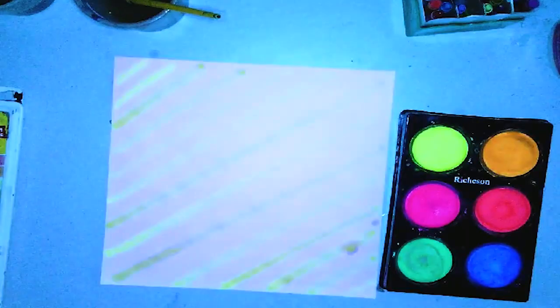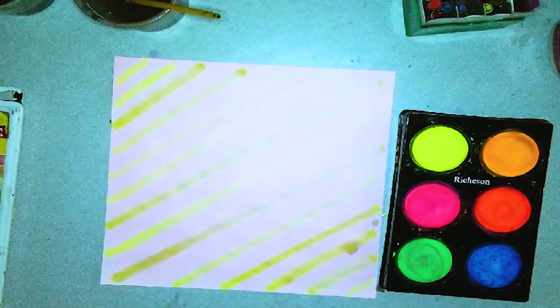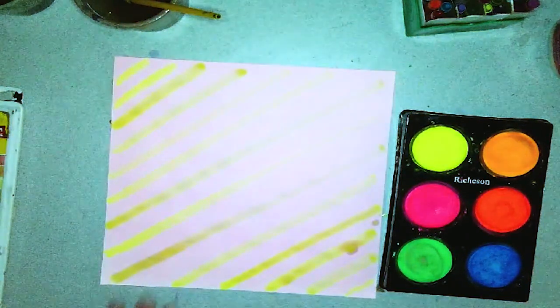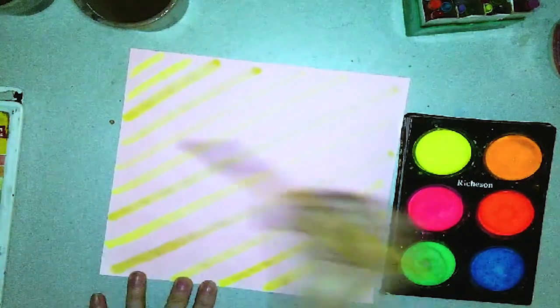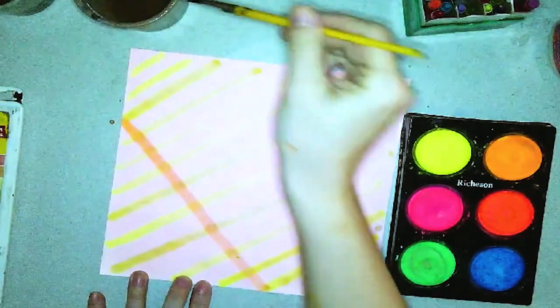Both the papers react differently just like different colors of paint will react differently. You can choose paper that is already black light reactive or you could pick paper that's not reactive and let your paint do all the reactivity.